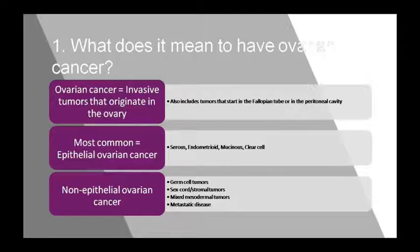Germ cell tumors account for 15-20% of ovarian tumors. The subtypes in this class include teratoma, dysgerminoma, endodermal sinus tumor, and choriocarcinoma.